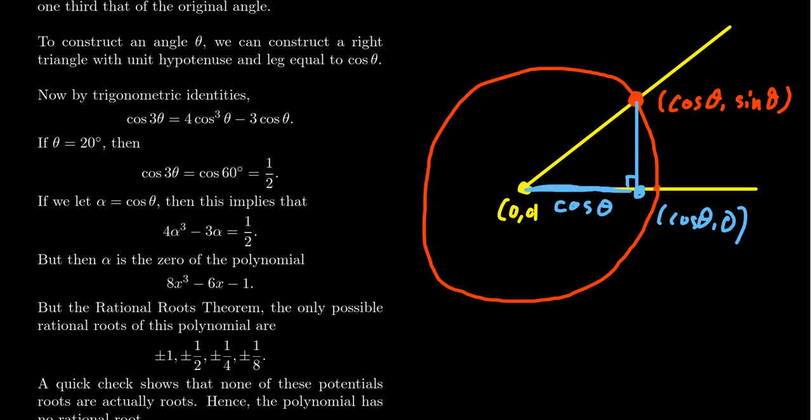So if the angle theta is constructible, that means the distance cosine of theta is constructible, and this process is reversible. So we can construct the angle theta if and only if we can construct the distance cosine of theta.